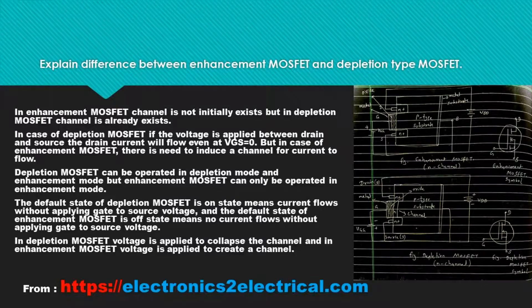Explain the difference between enhancement MOSFET and depletion type MOSFET. In enhancement MOSFET, the channel does not initially exist, but in depletion MOSFET, the channel already exists. In the case of depletion MOSFET, if voltage is applied between drain and source, the drain current will flow even at VGS equals zero.